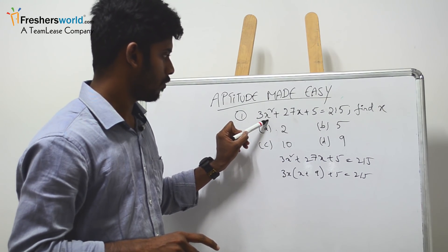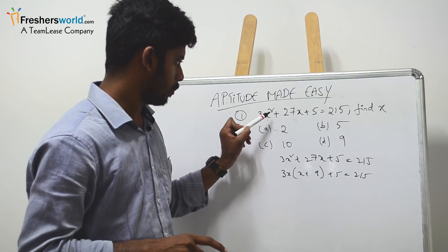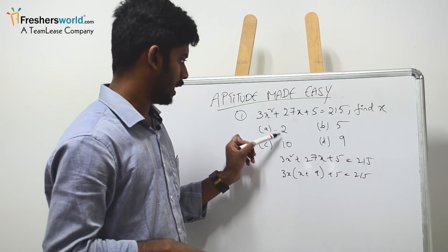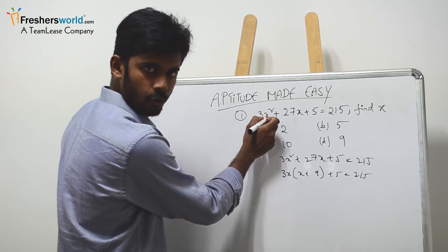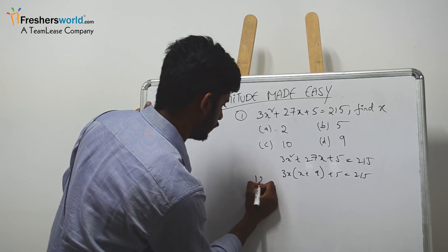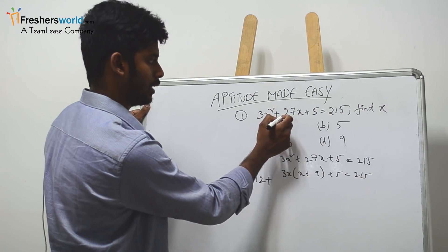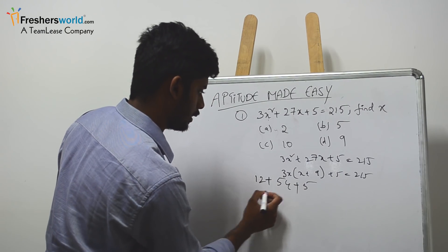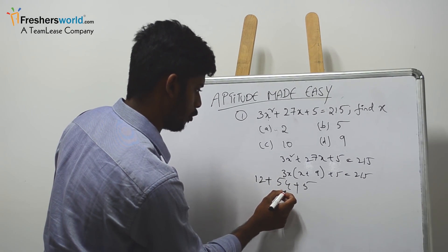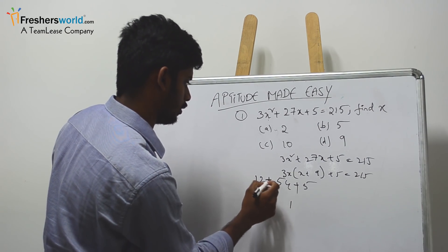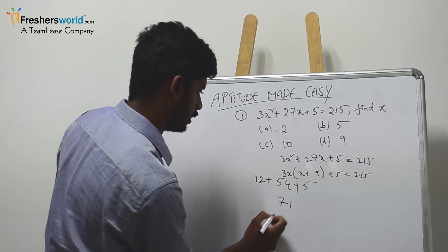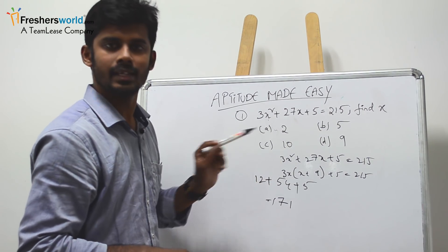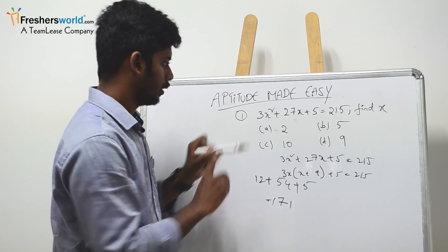You can keep the option numbers in place of x. Whichever number gives you 215, that's your answer. For example, I'm taking 2. 2 square is 4, 4 times 3 is 12. 2 into 27 is 54, plus 5 is 71. So 71 is not equal to 215, so option A is wrong.